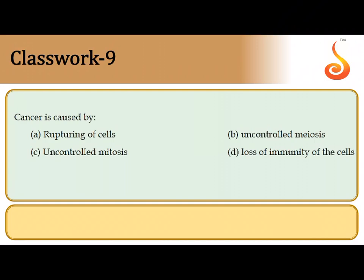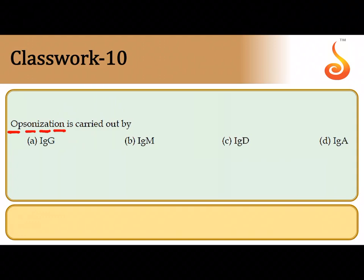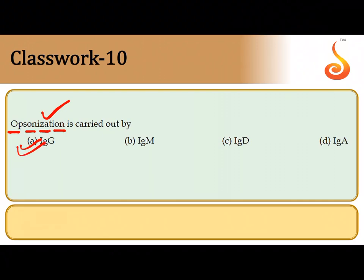The tenth question: what is opsonization? When a foreign body or antigen enters your system, the antigen is coated on all sides by antibodies, labeling it so it can be recognized by the immune system. This process is called opsonization. The antibody which exhibits opsonization to the greatest degree is IgG. So IgG, option A, is the correct answer.